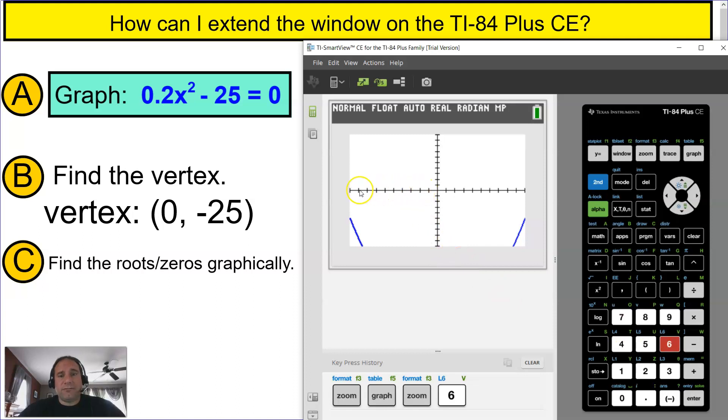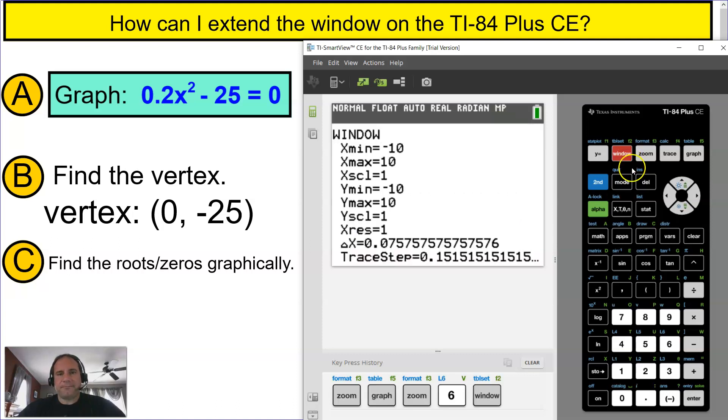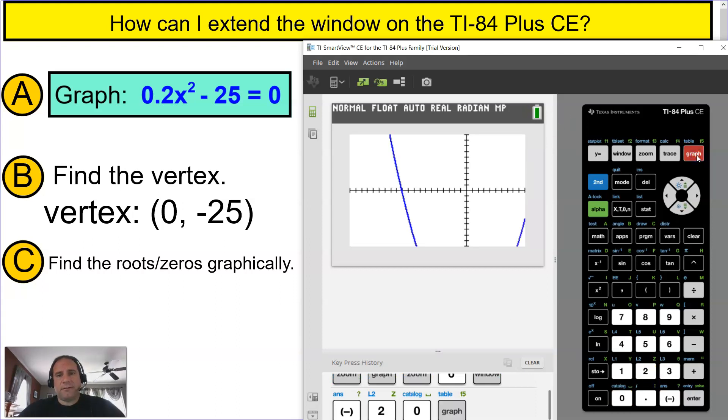Now to get the roots or the zeros, you have to extend the window to the left and you have to extend the window to the right. So it only has to do with the x-axis. If you press that window and the x-min is now set at negative 10, maybe you want to set it at negative 20. I'm going to press graph, and that looks okay.